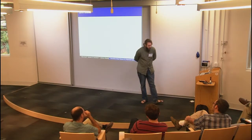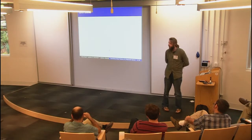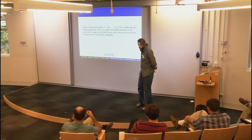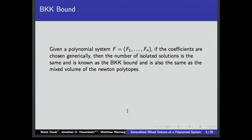The first thing we're going to start with is the BKK bound — the Bernstein-Kushnirenko-Khovanskii bound. Whenever we have a polynomial system with generic coefficients, we're going to end up with the same number of complex solutions for any random choice of our coefficients. There's a wonderful theorem by these three guys saying that this is really the same as the mixed volume of a polynomial system.